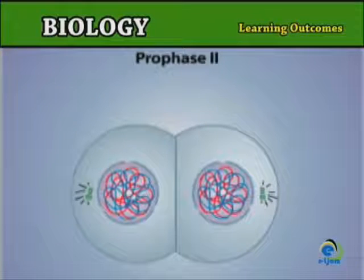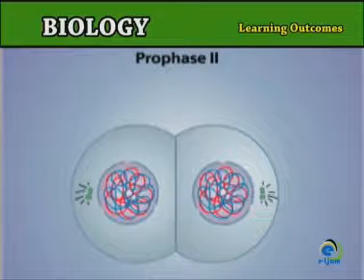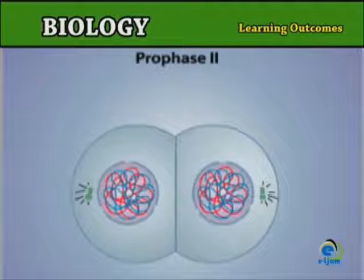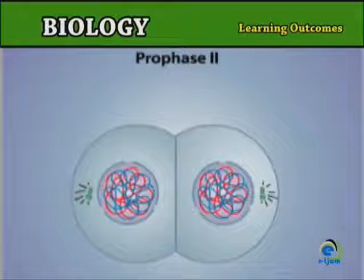During prophase II, centrioles in the two daughter cells replicate and a new spindle is formed at right angles to the first one.